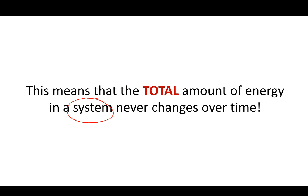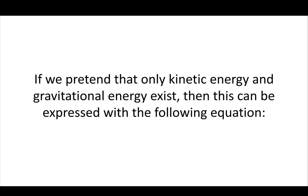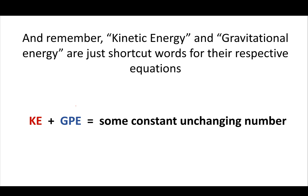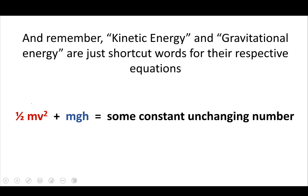If we consider only kinetic energy and gravitational energy, we can summarize this conservation law as follows: the kinetic energy plus the gravitational potential energy of an object equals some constant, unchanging number. Remember, kinetic energy and gravitational potential energy are not really concepts in themselves — they're shortcut words for their respective equations. KE really stands for one-half mv squared, and the same goes for GPE.